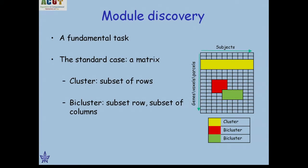We are talking about modules. Another way to think about modules: suppose we have a matrix. A cluster would be a set of rows that behave similarly across all columns. A bi-cluster would be a subset of the rows and a subset of the columns that show some coherent behavior. Bi-clusters are more flexible — they can overlap, and the search space is much richer.